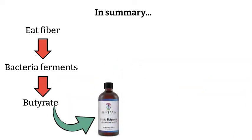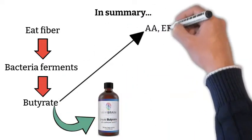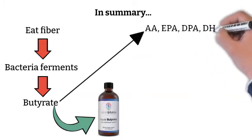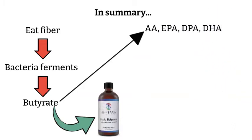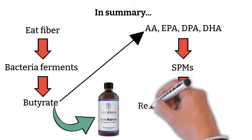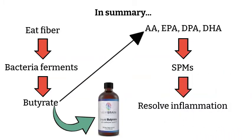Butyrate then activates AA, EPA, DPA, and DHA to generate SPMs, and these SPMs resolve inflammation.